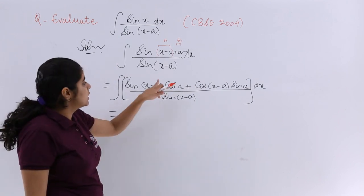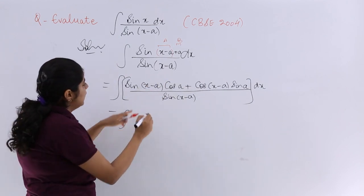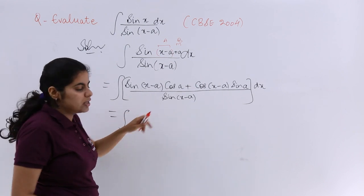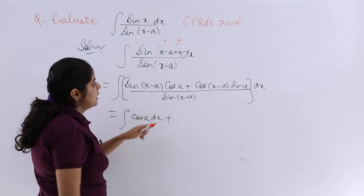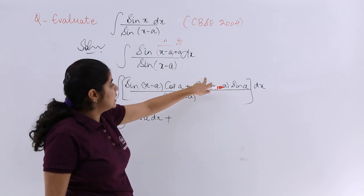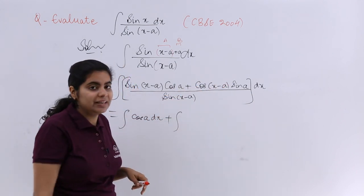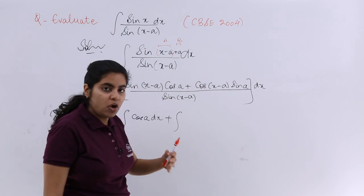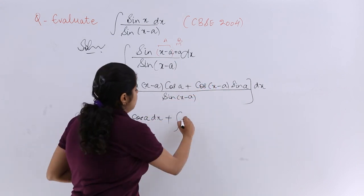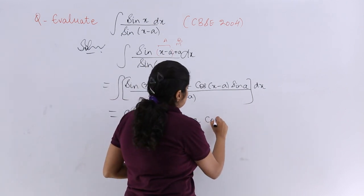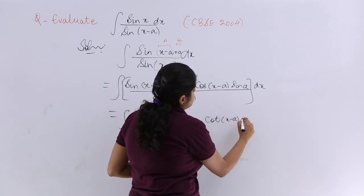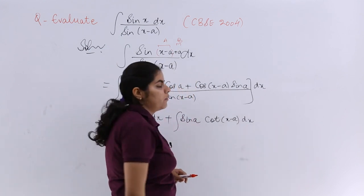Now what I have is the first term is nothing but integration sin(x-a) cos a upon sin(x-a) which is nothing but cos a dx, then is plus, again integration because we are separating the integral. Sin a here, cos(x-a) upon sin(x-a) is cot(x-a) and dx already there.